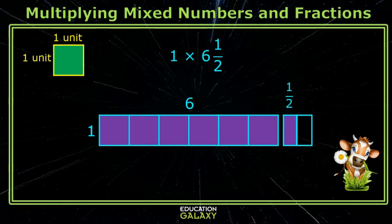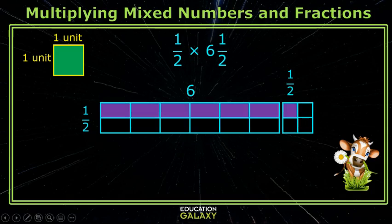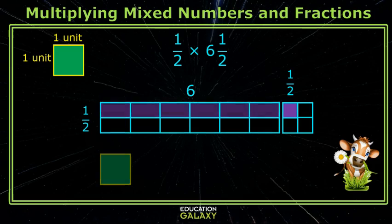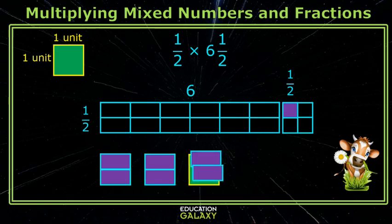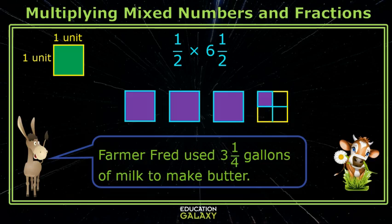Well, then for half, I just cut it in half. That's right. Remember to simplify. Okay, I'll put the halves together to make wholes. So Farmer Fred used three and one-fourth gallons of milk to make butter.